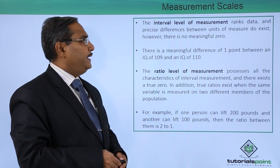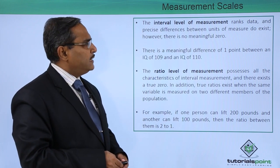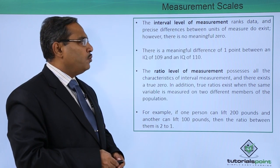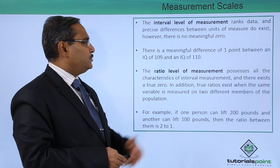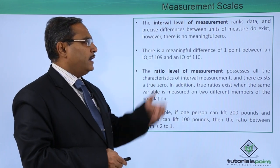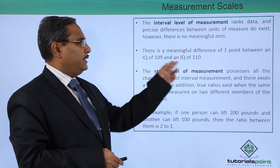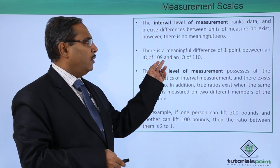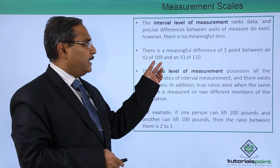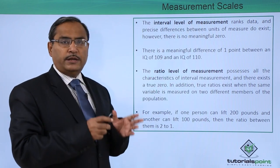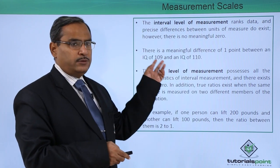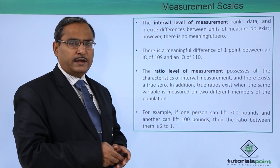The next one is the interval level of measurement, which ranks data and precise differences between units of measurement do exist. However, there is no meaningful zero. For example, there is a meaningful difference of 1 point between IQ 109 and IQ 110. This is a good example of interval level of measurement, where we can calculate precise differences between units of measure.